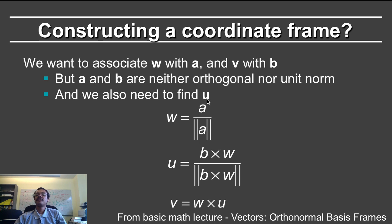You also need to find the third axis of the coordinate frame. So what you do is, first you create the w vector, which is just normalizing a, and that's equivalent to the z axis.